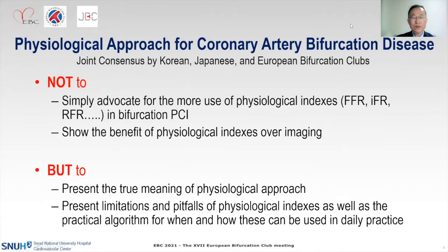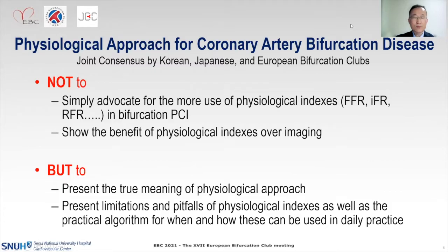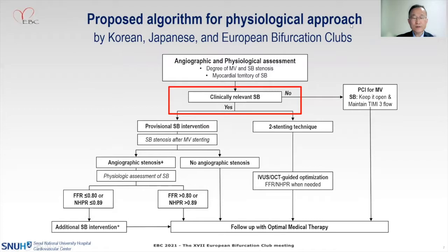This document is not to simply advocate for more use of physiological indices, and not to show the benefit of physiological indices over imaging, but to present the true meaning of a physiological approach for bifurcation lesions, and to present even the limitations and pitfalls of physiological indices, as well as a practical algorithm for applying physiological indices in daily practice. It is interesting to see that the first step in this algorithm for physiological approaches is not physiological indices, but clinical relevance.